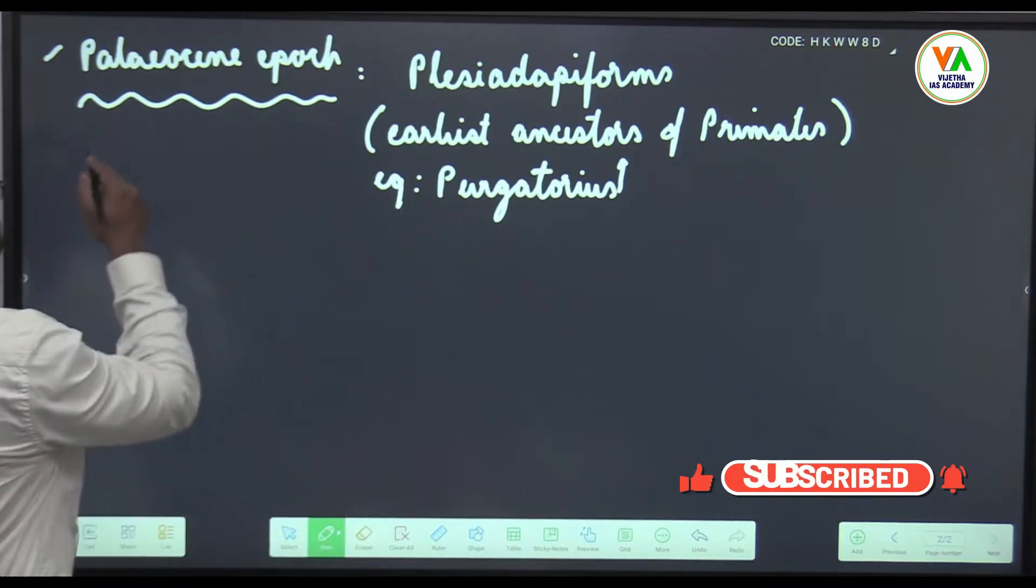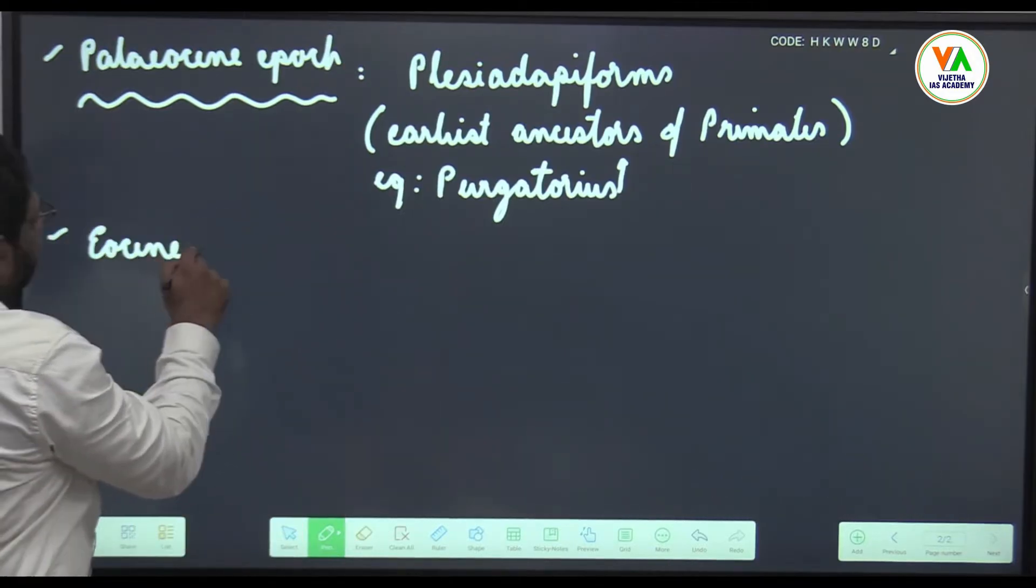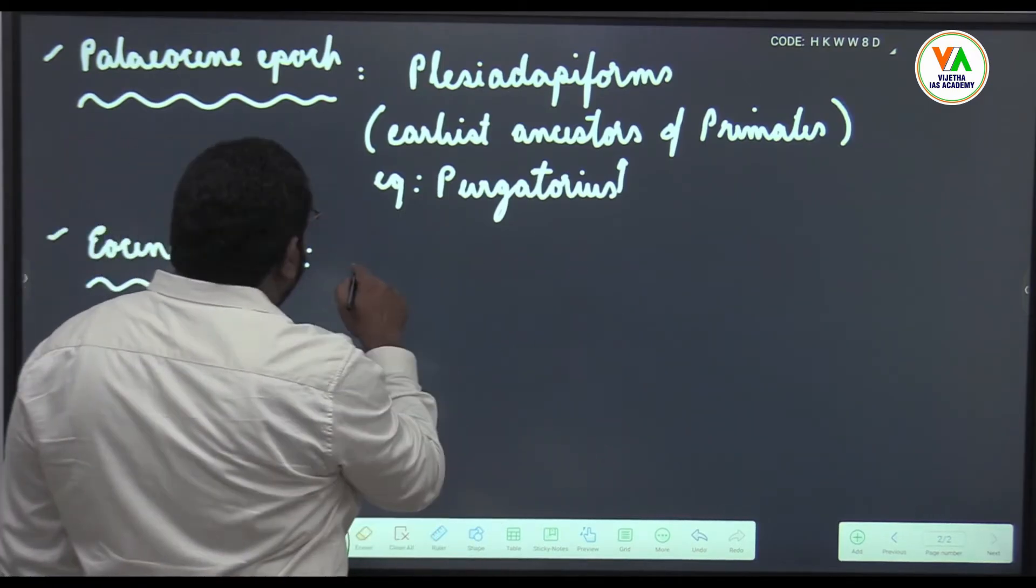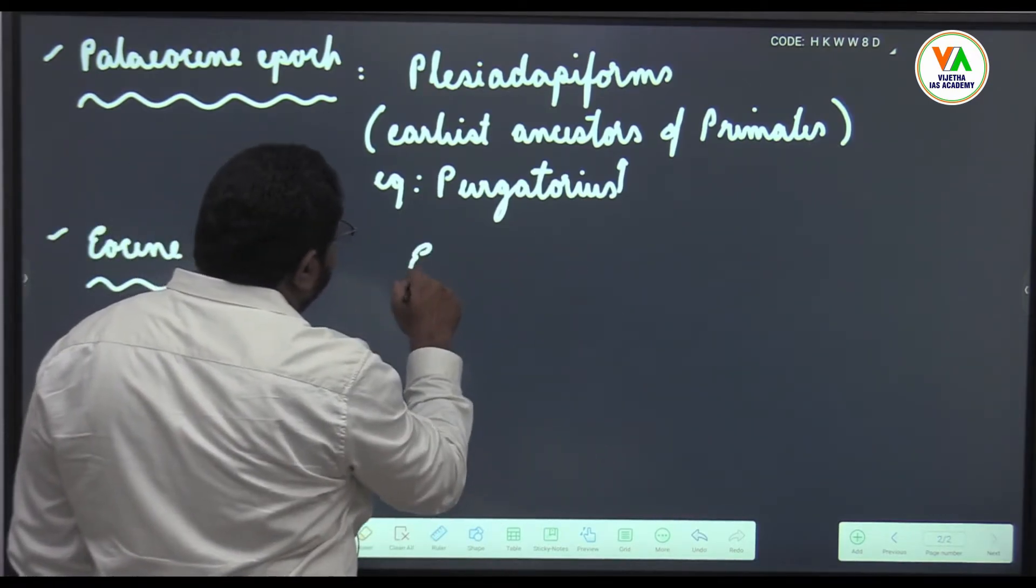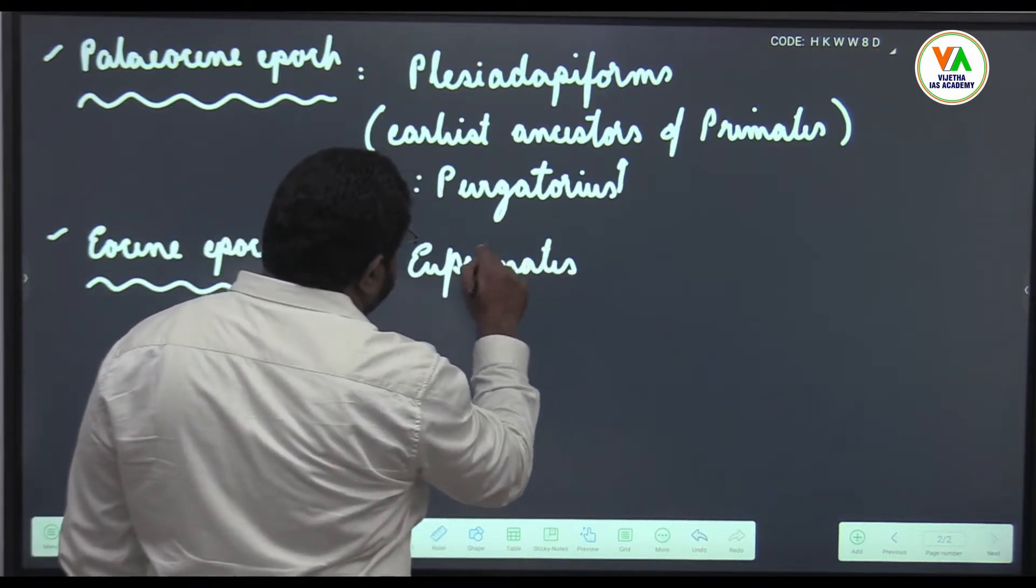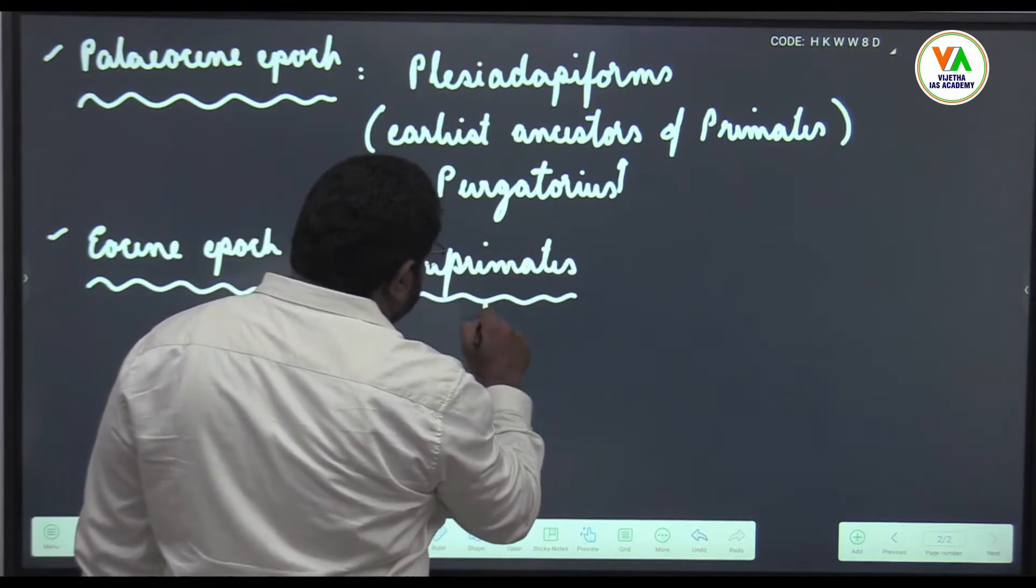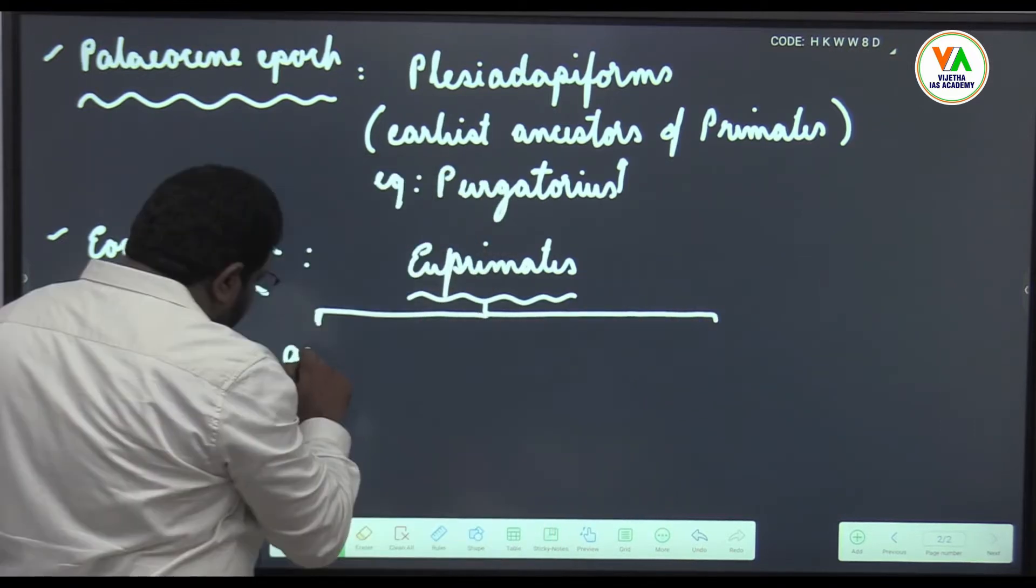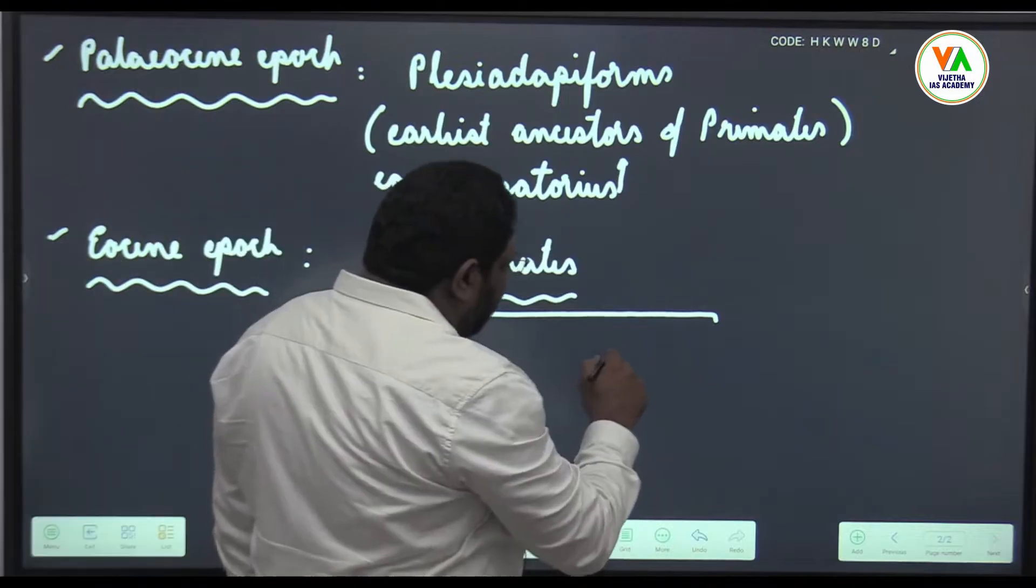After Paleocene epoch you have Eocene epoch. In Eocene epoch you have Adapiforms which are U-primates. U means true primates. Under this U-primates you have two forms: Adapiforms and Omomiforms.